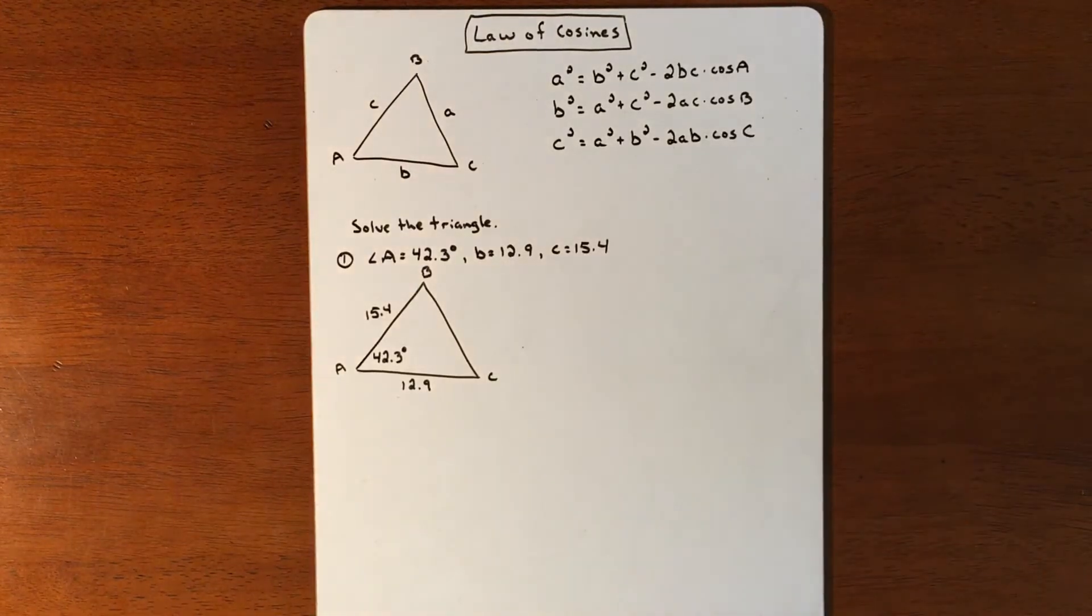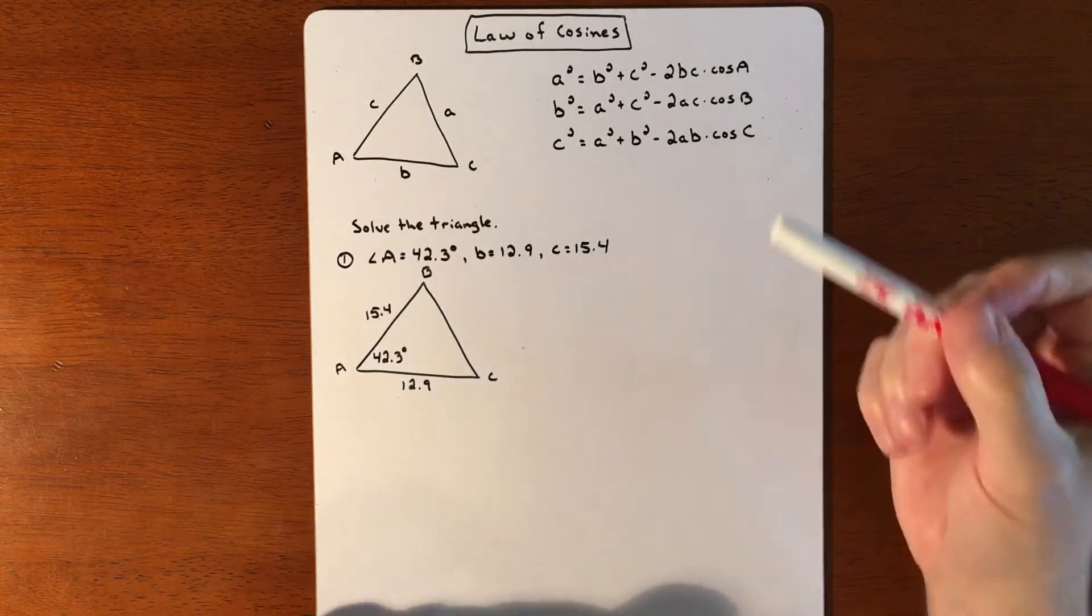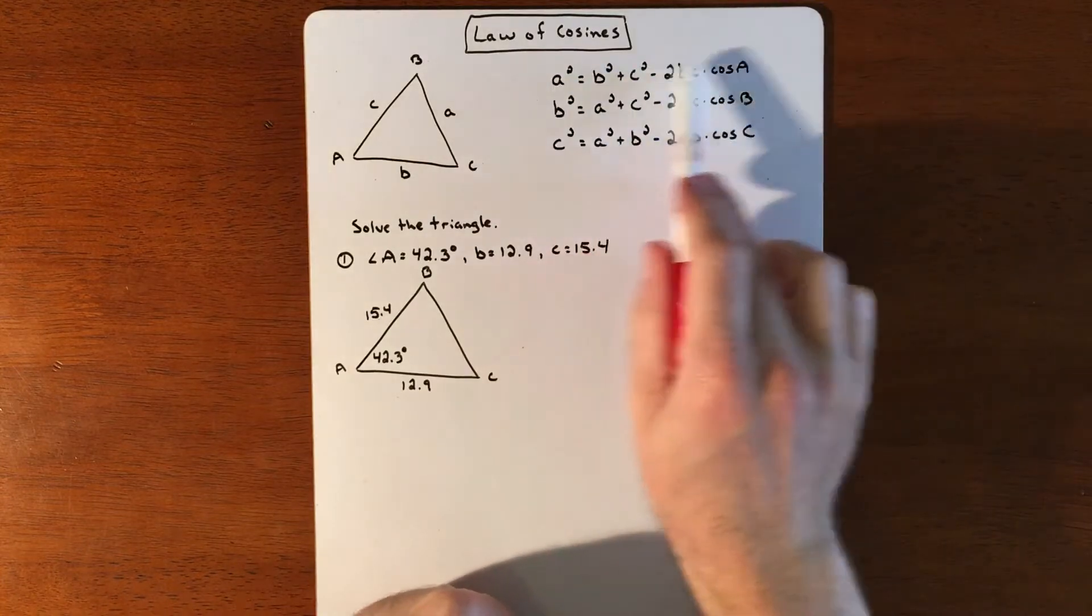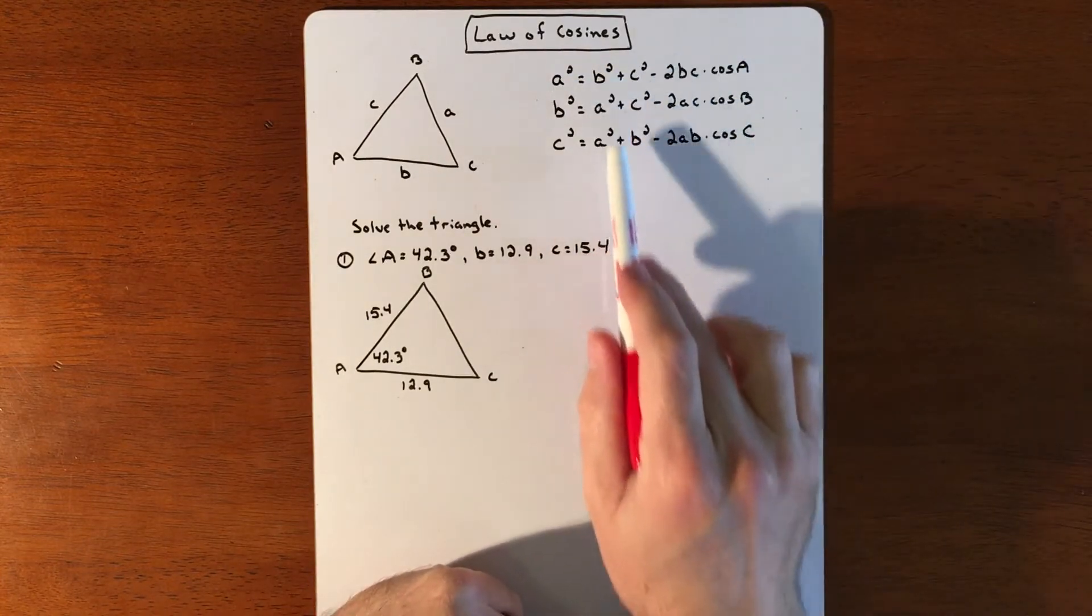In this lesson, we're going to introduce the Law of Cosines. Law of Cosines is basically when you can't use Law of Sines, we're going to use Law of Cosines. So here's what the formula looks like. There are three versions, three iterations of this.